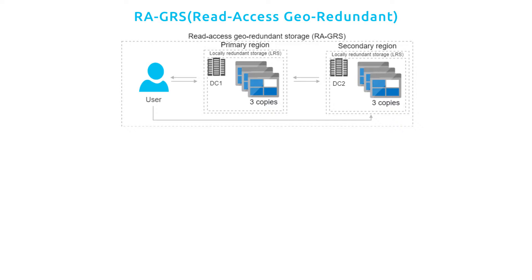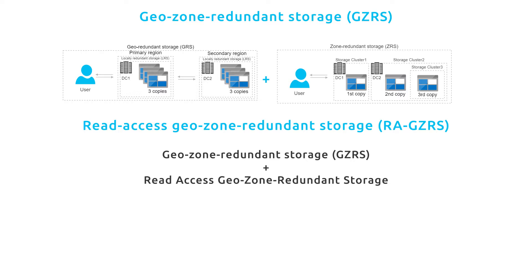We also have two additional redundancy options: Geo-Zone-Redundant Storage (GZRS), which is equivalent to Zone Redundant Storage plus Geo-Redundant Storage. Another one is Read Access Geo-Zone-Redundant Storage (RA-GZRS), which combines Geo-Zone-Redundant Storage with read access to the secondary region.